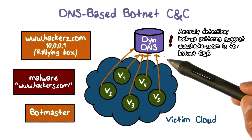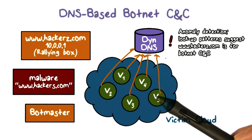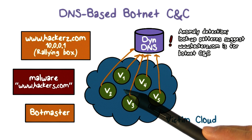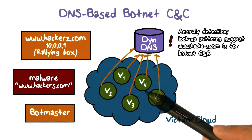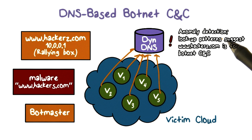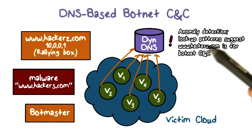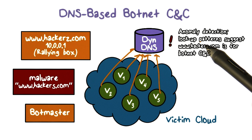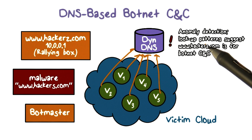For example, if a domain such as hackers.com is being looked up by hundreds of thousands of machines all over the internet, and yet this domain is unknown to Google search, this is anomaly. Therefore, we can use anomaly detection at the dynamic DNS provider to examine queries to DNS domains in order to identify botnet C&C domains.